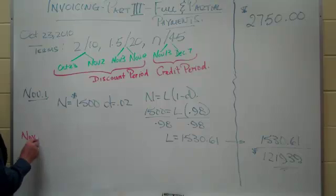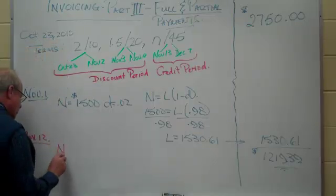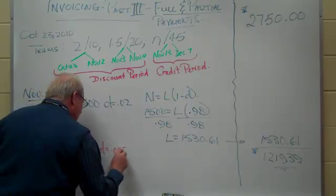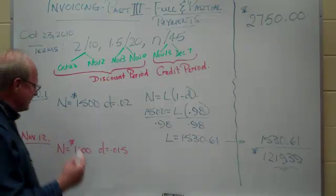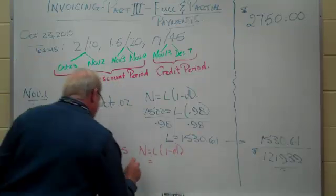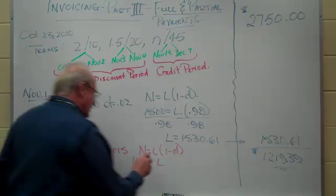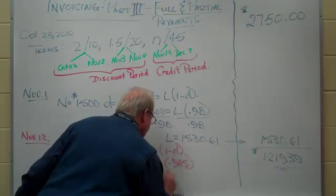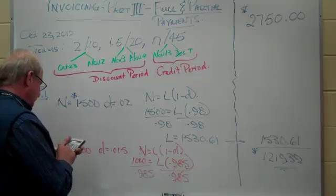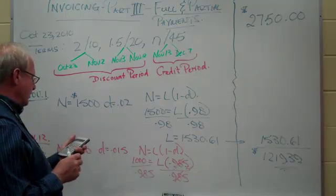On November the 12th we say how much money can we afford to send in? Let's send in $1,000 and try to almost pay it off. So we are sending in $1,000 net. The last discount period is 1.5%. We want to know what we will get credited with — that is the list amount. Same formula: Net equals List times (1 minus discount). So $1,000 equals List times (1 minus 0.015), which is 0.985. Divide both sides by 0.985. So we have $1,000 divided by 0.985, and we will get credited with $1,015.23.